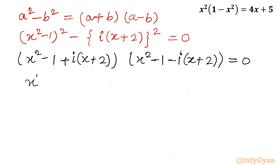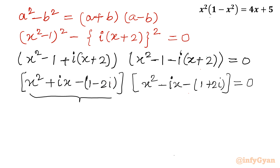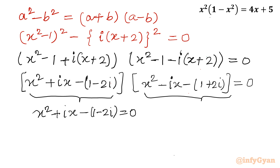Expanding, the first bracket gives x squared plus ix minus (1 minus 2i), and the second bracket gives x squared minus ix minus (1 plus 2i), equal to 0. Since the product is zero, either x squared plus ix minus 1 minus 2i equals 0, or x squared minus ix minus 1 plus 2i equals 0. We now have two quadratic equations to solve.